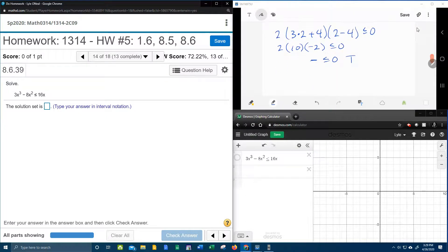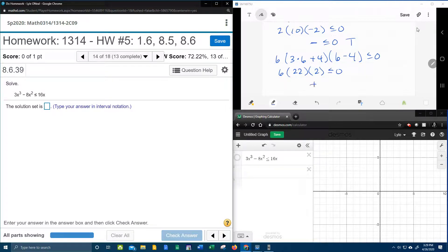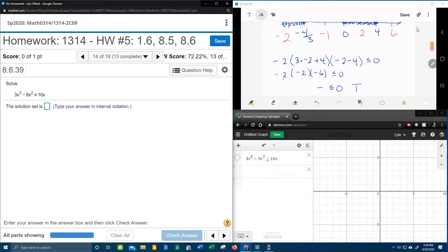And again, just to prove that everything is correct here, we're going to check the 6. 6, 3 times 6 plus 4, 6 minus 4, that's going to be 6 times, 3 times 6 is 18, 19, 20, 21, 22. 6 minus 4 is 2, positive times a positive times a positive is positive. Positive numbers are not less than or equal to 0, and so that is false.